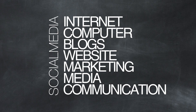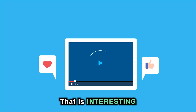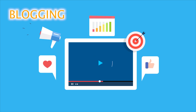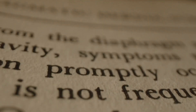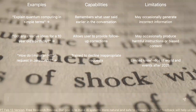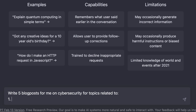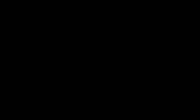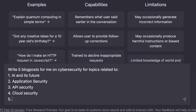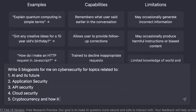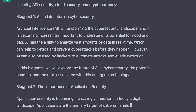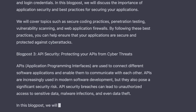One of the biggest challenges bloggers face is generating and writing material consistently day after day and week after week that is interesting, engaging, and relevant to your audience. Now you can use ChatGPT to do that for you. We could say 'write five blog posts for me on cybersecurity for topics related to AI and its future, application security, API security, cloud security, and cryptocurrency and how it relates to cybersecurity.' And just like that, it'll do it for you. It's pretty amazing how it can do all these things for you.